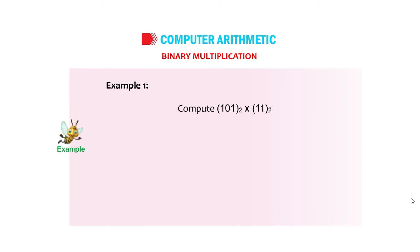Example 1: Compute (101) base 2 into (11) base 2. 101 into 11, 101 plus 101, equals 1111.